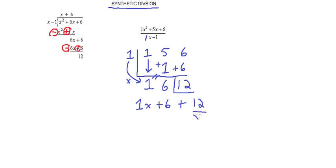And you can see this matches up exactly. If we had done it with the long division, we also would have gotten 12 over x minus 1.